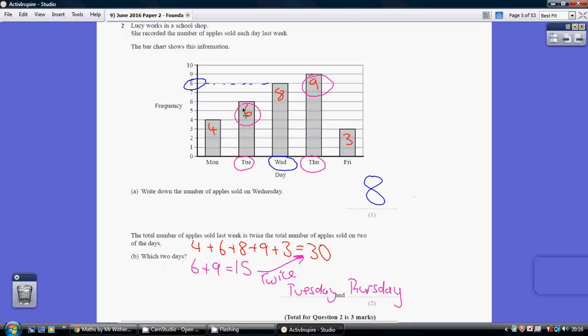we have a four, a six, an eight, a nine, and a three, that gives us 30.